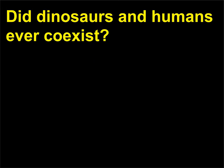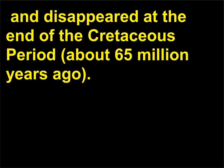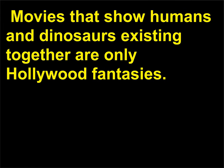Did dinosaurs and humans ever co-exist? No. Dinosaurs first appeared in the Triassic period, about 220 million years ago, and disappeared at the end of the Cretaceous period, about 65 million years ago. Modern humans, Homo sapiens, appeared only about 25,000 years ago. Movies that show humans and dinosaurs existing together are only Hollywood fantasies.